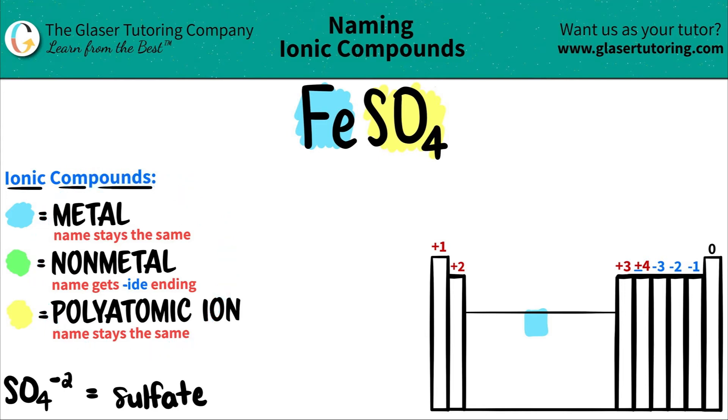Now we have everything accounted for. Let's start naming. The metal name comes first and always stays the same - Fe is iron. The polyatomic comes next (SO4) and that name also stays the same - sulfate.